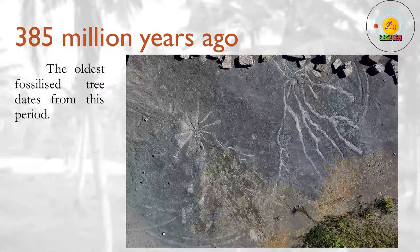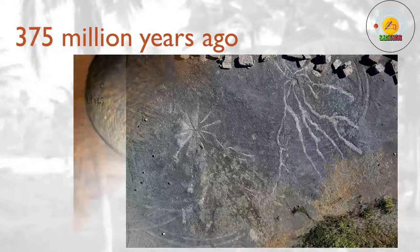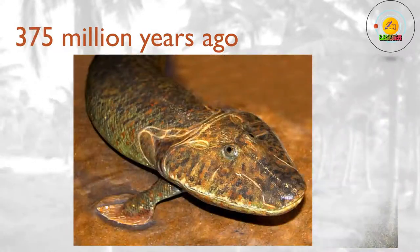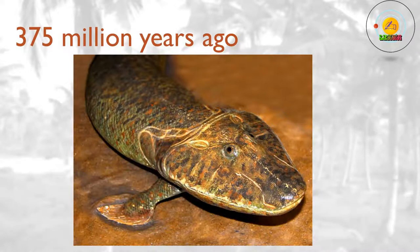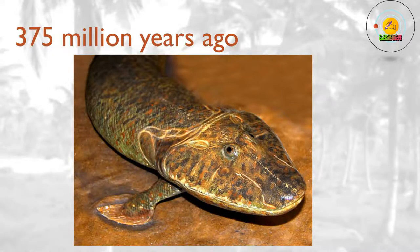385 million years ago? The oldest fossilized tree dates from this period. 375 million years ago? Tiktaalik, an intermediate between fish and four-legged land animals, lives around this time. The fleshy fins of its lungfish ancestors are evolving into limbs.